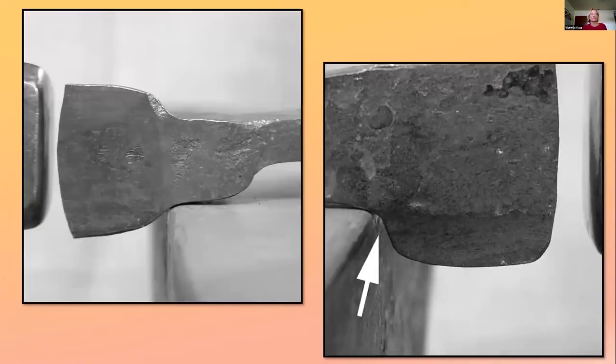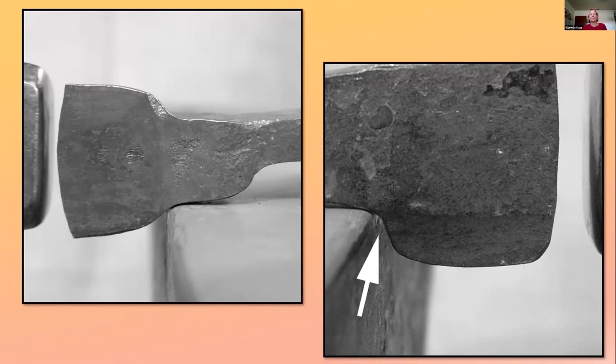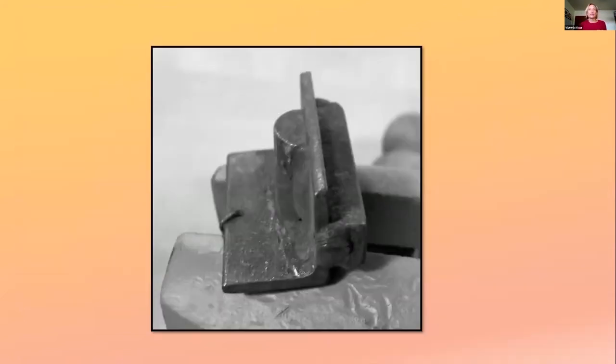Keep this square. You can correct for the stretching that happened as you fullered that and drew that out by putting it over, not a sharp side but not a round side of your anvil and just hitting it with your hammer leg up against the anvil and your hammer vertical so that you bring this in a little bit and that'll help set these shoulders to square as well. Now you're ready to bring in the sides and the best way to do that is with this little tool.